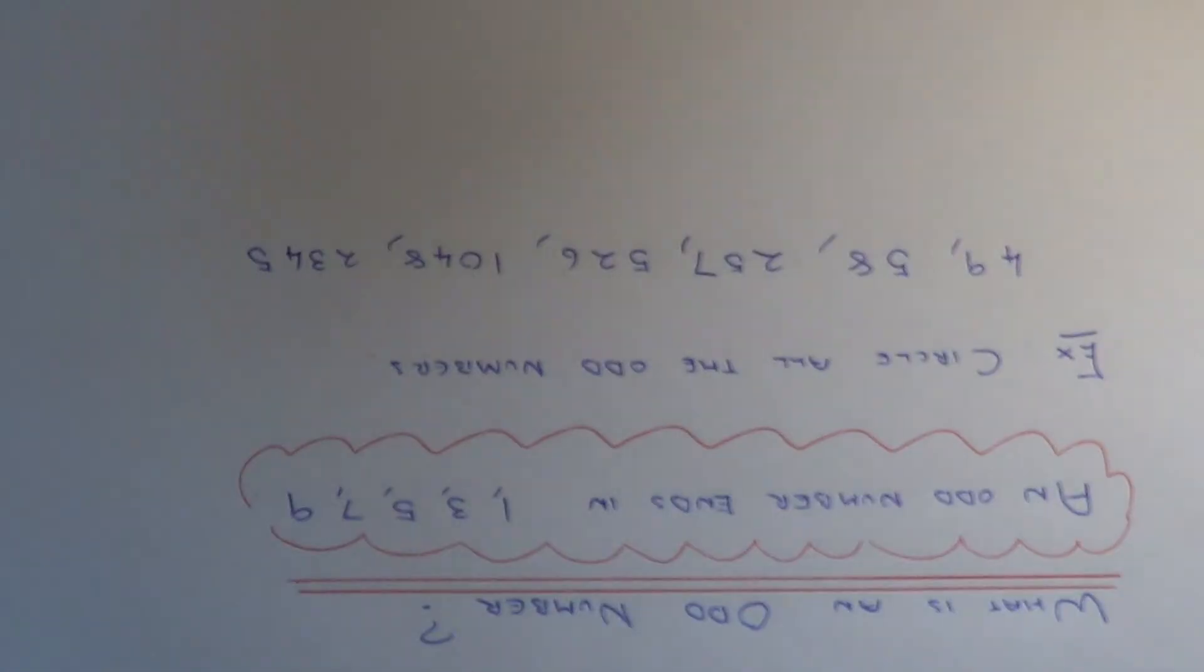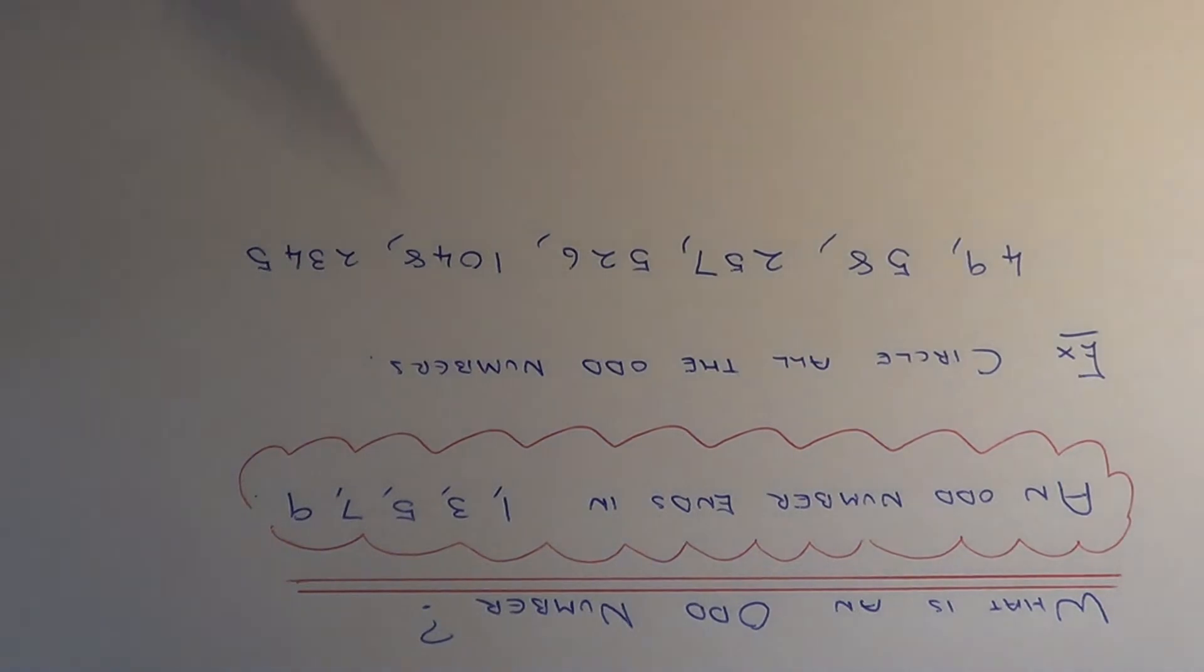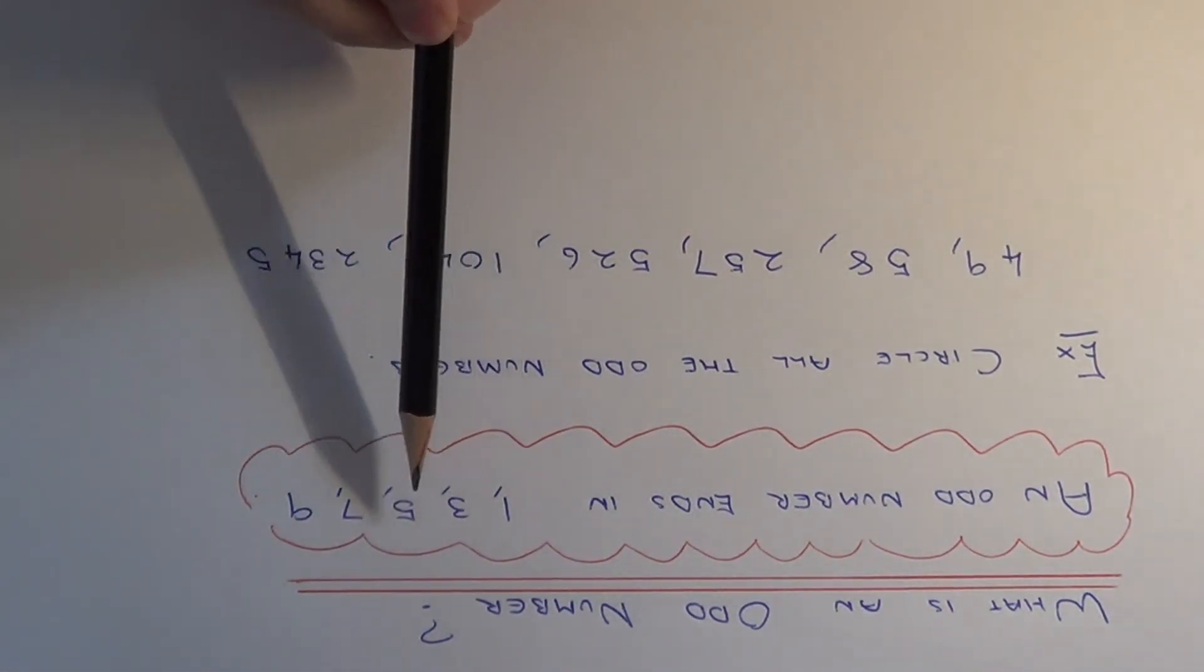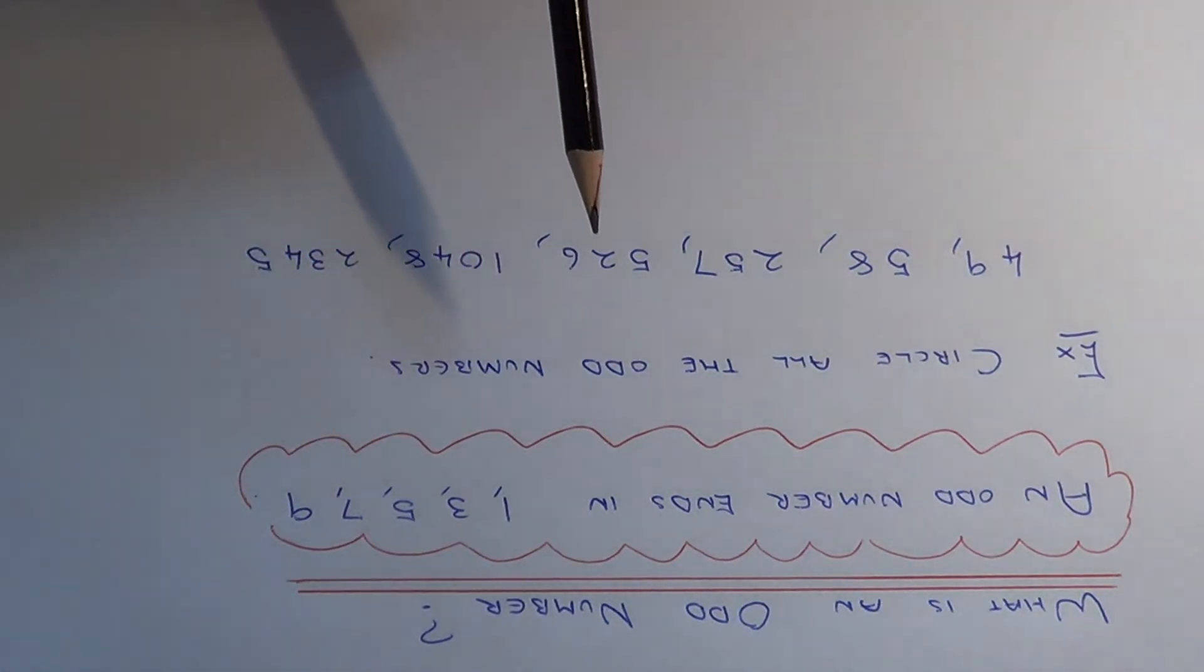Hi, today I'm going to answer the question what is an odd number. All you need to do to decide if the number is odd is just look at the last digit of the number, and if the last digit is either 1, 3, 5, 7, or 9, then the number is going to be an odd number.